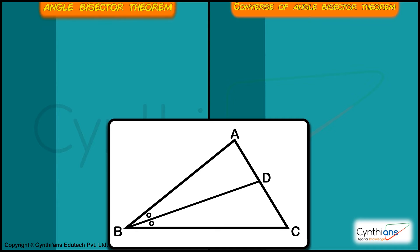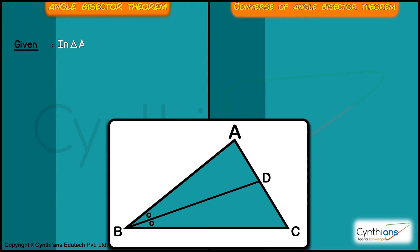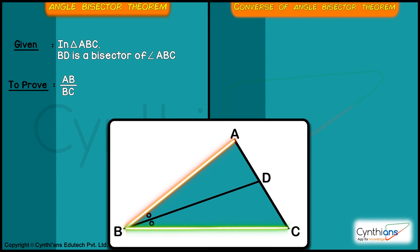So in angle bisector theorem, we have been given in triangle ABC, BD is bisector of angle ABC. Then prove that AB upon BC is equal to AD upon DC. That means we need to prove that these ratios are equal.